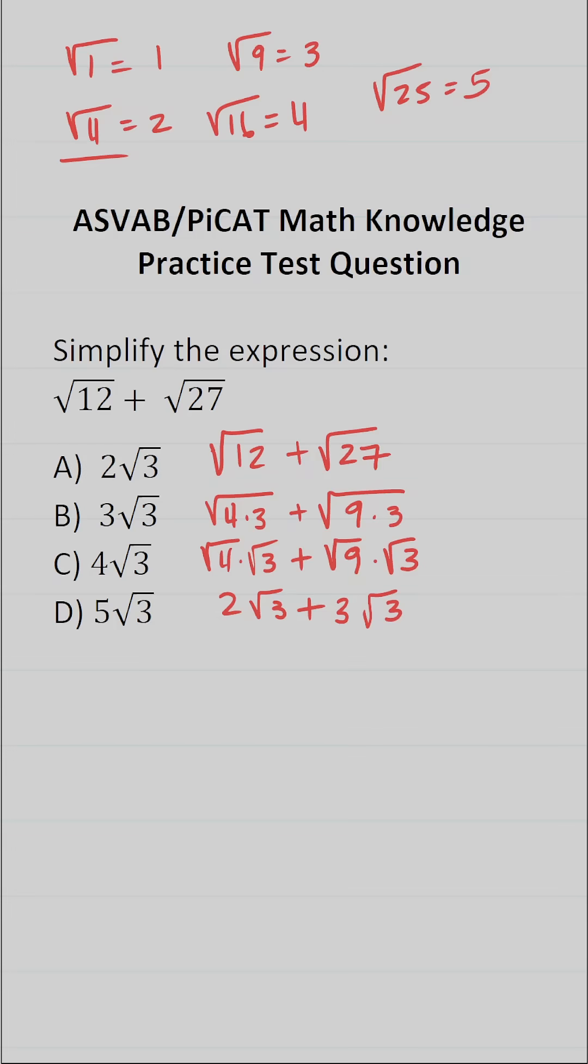Now we could just add these because they have the same root. So 2 square root 3 plus 3 square root 3 is going to be 5 square root 3. So the answer to this one is D.